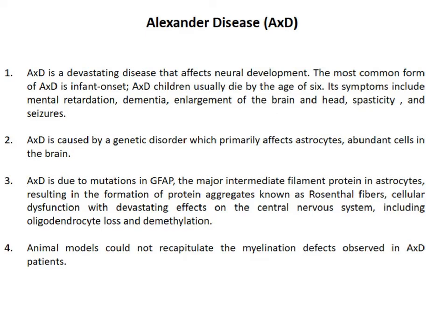I'm going to share with you an example of modeling human disease using the iPSC platform. I will show how we can model disease for which the phenotype could not be recapitulated in animal models. Such an example is Alexander disease, which is a neurological disease that has neither cure nor a standard course of treatment. The most common form is infantile onset; those children usually die by the age of six. Symptoms include mental retardation, dementia, spasticity, seizure, and early death.